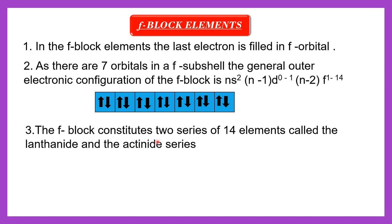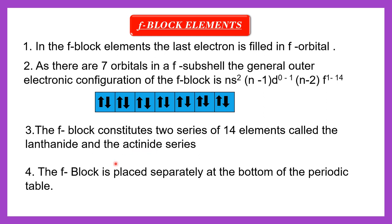The F block constitutes two series of 14 elements each: the lanthanide series and the actinide series. The F block has 28 elements in total across these two series, and the F block is placed separately at the bottom of the periodic table. For example, uranium (atomic number 92) is an F block element with electronic configuration 5f3 6d1 7s2 — since the last electron enters the f subshell, it is classified as an F block element.